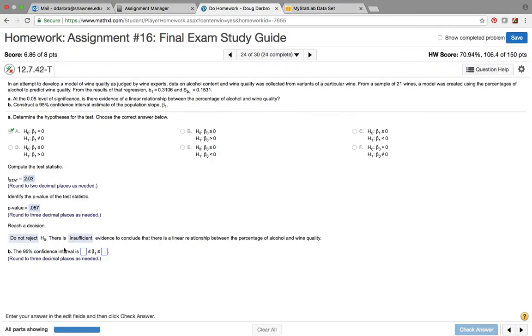So guys, to find the left value I'm going to take 0.3106 minus 2.093 times 0.1531, and then I'm going to take 0.3106 plus 2.093 times 0.1531. So when I do that, I get negative 0.0098 and 0.631. So to three places, negative 0.010, and to the right will be 0.631.